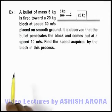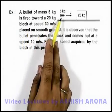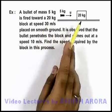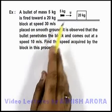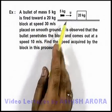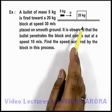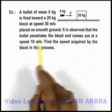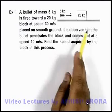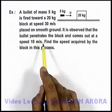In this example, we are given that a bullet of mass 5 kg is fired towards a 20 kg block at speed 30 m/s, which is placed on smooth ground. It is observed that the bullet penetrates the block and comes out at a speed of 10 m/s.